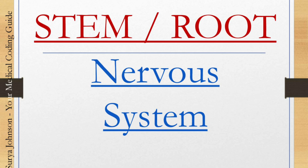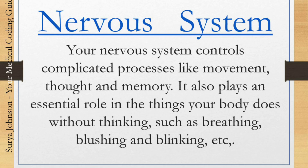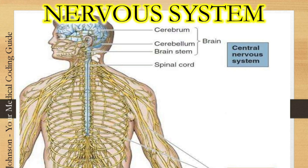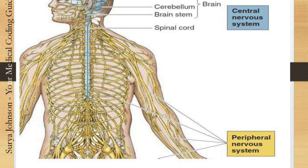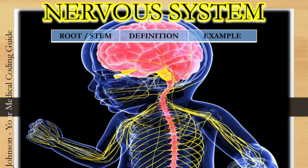Next, we will see about the nervous system. Your nervous system controls complicated processes like movement, thought, and memory. It also plays an essential role in things your body does without thinking, such as breathing, blushing, and blinking. Your nervous system consists of the brain — which is divided into the cerebrum, cerebellum, and brainstem — and the spinal cord, which make up your central nervous system. There is also the peripheral nervous system throughout your body.